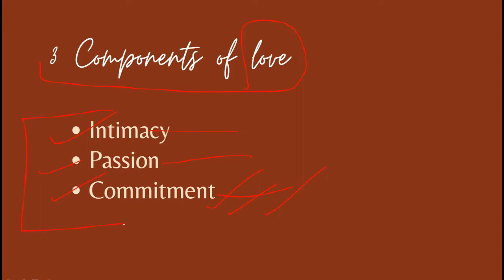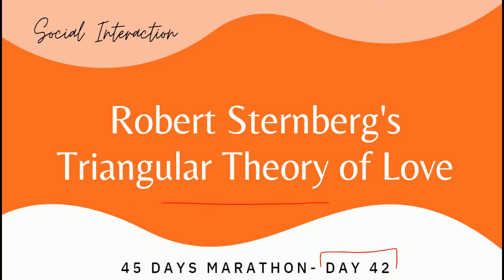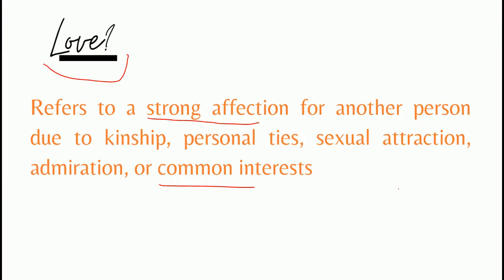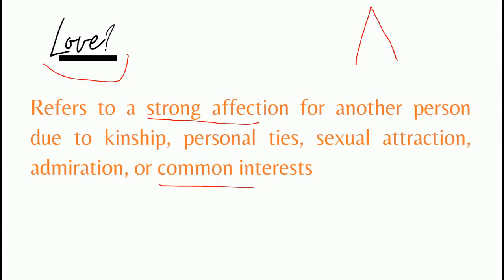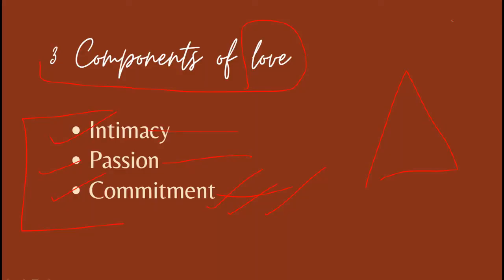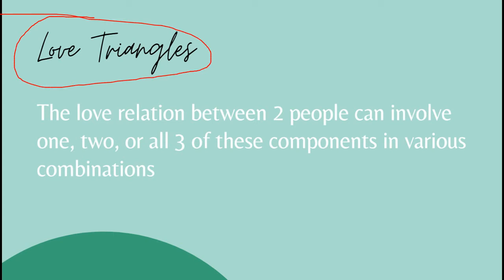These are the three basic components of love. Because Robert Sternberg assumes love has three components — intimacy, passion, and commitment — they form a triangle, which is why this is known as the Triangular Theory of Love. According to this theory, the relationship between two people can involve either one, two, or all three of these components in various combinations.